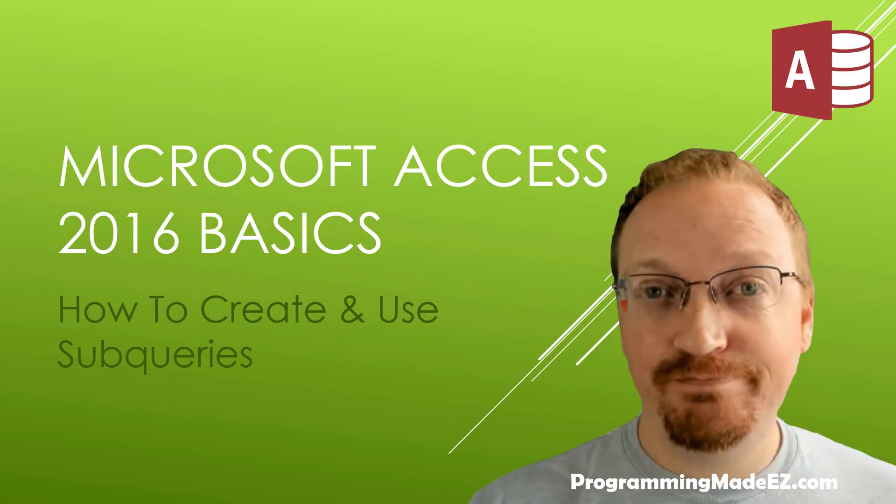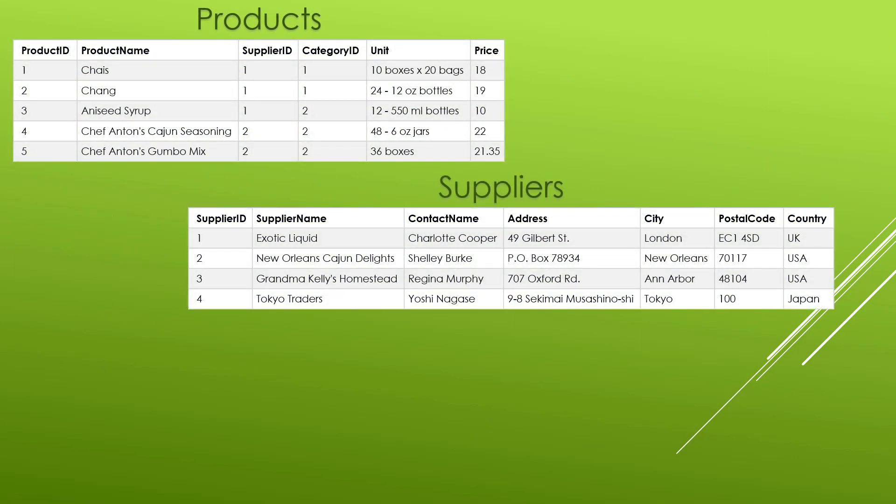Hello everyone and welcome to Microsoft Access 2016 Basics. My name is Steve Bishop and in this video we're going to be talking about how to create and use subqueries. Previously, if we wanted to use criteria filtered through the suppliers table to select items from the products table, we would have used a WHERE statement with IN, EXISTS, ANY, or ALL. But there's a simpler way, which is to use a subquery with joins.